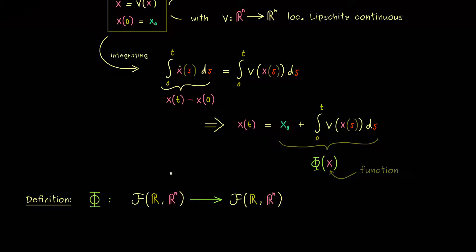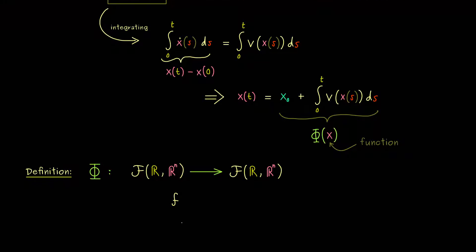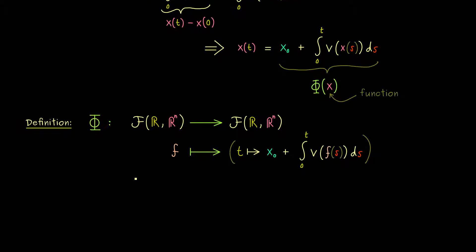Ok, and now Φ maps any function from this function space to another function from the function space. And maybe let's call this function now simply lowercase f. This means we map f to a new function now, and the variable name for the new function here could be t. This means now t is mapped to the value of the function and we already know that. It's x₀ plus the integral from 0 to t of our function v. However, now the input for the function v is f(s). Ok, there we have it. This is the definition of our map Φ.